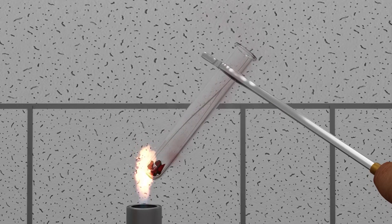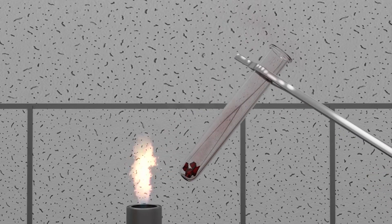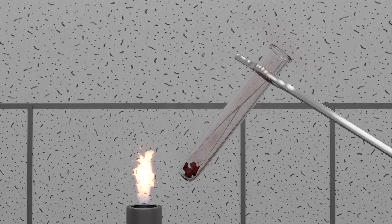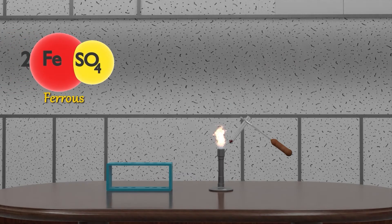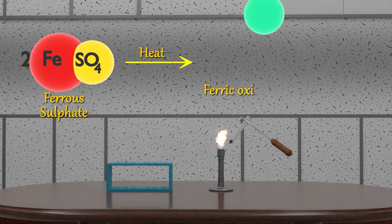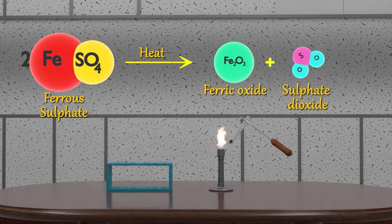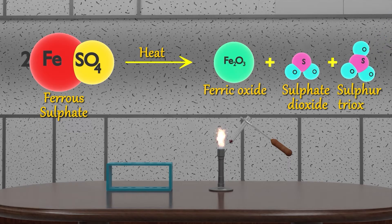The color has changed. You can also smell the characteristic odor of burning sulphur. So now if we see the reaction: when ferrous sulphate is heated, it gives us ferric oxide, sulphur dioxide, and sulphur trioxide.